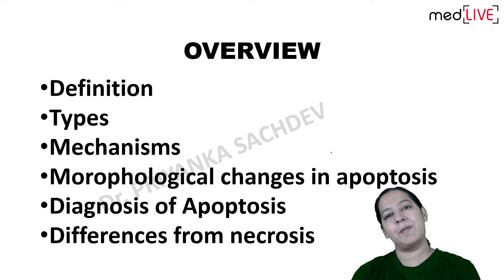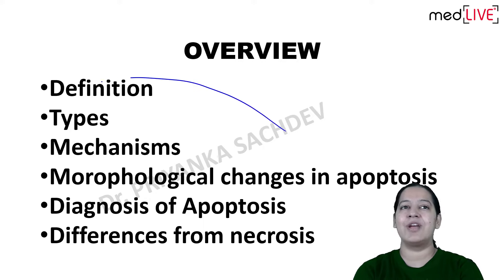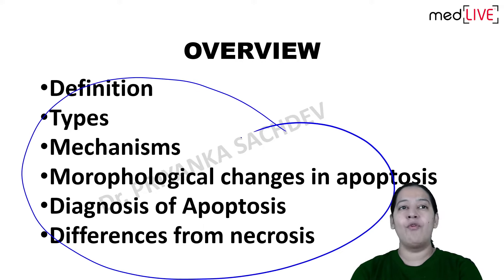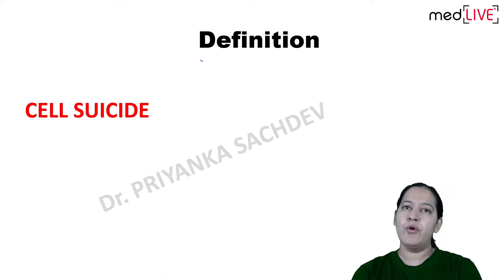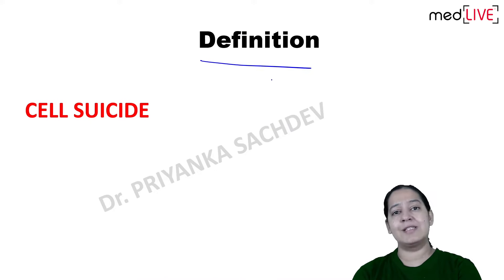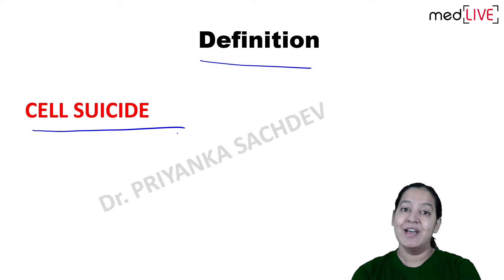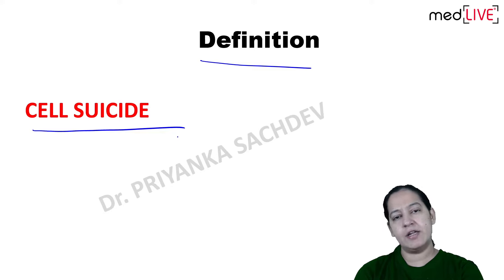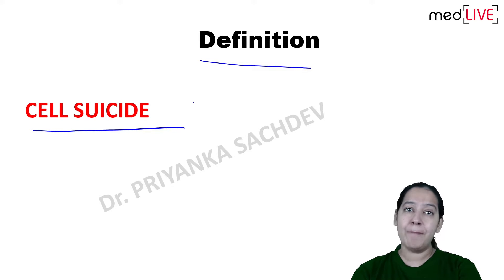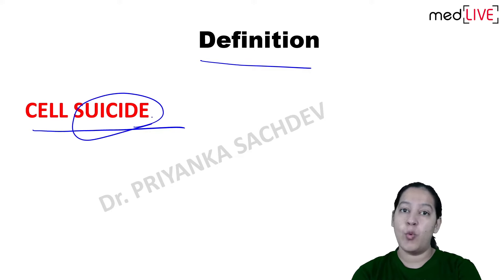Let's start with apoptosis. What is apoptosis? If you ask me in simple words, I will say in one word: apoptosis is cell suicide. Now why would a cell do suicide? Why is a particular cell doing suicide? If there is any cell that has already performed its function and is no more required in the body, that is the first situation.